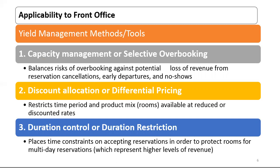In some cases a hotel may choose to accept more bookings than it can actually accommodate. Hotels will typically accept a statistically supported number of reservations in excess of actual room availability in an attempt to offset the effects of early departures, cancellations and no-shows. This is also called selective overbooking, which balances the risk of overselling guest rooms against the potential loss of revenue arising from room spoilage — meaning rooms going unoccupied after the hotel stops taking reservations for a given date.